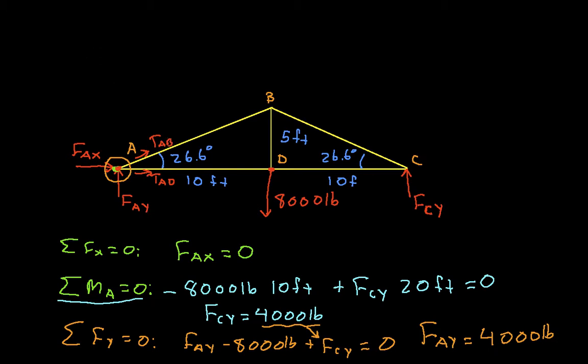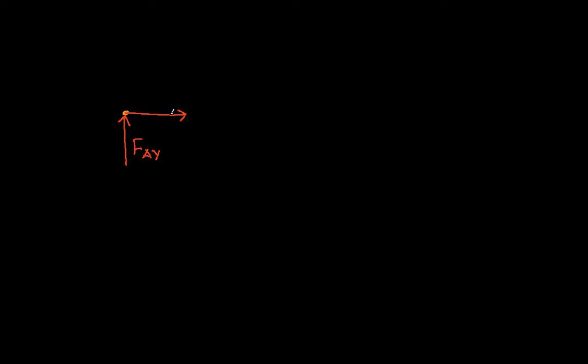In this video we'll identify the members by the two letters that identify the pins they're between. So this will be member AD, AB, BC, DC, and BD. Let's complete our free body diagram. We have TAD and TAB going off in this direction, and we know from the structure the angle here is 26.6 degrees.